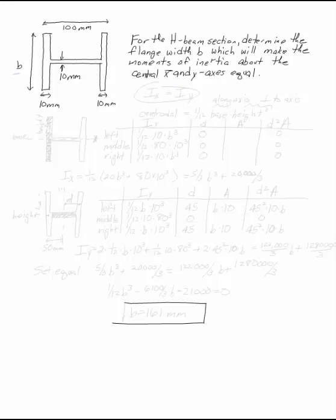For the H-beam section shown, determine the flange width B which will make the moments of inertia about the central x and y axes equal. We want to find Ix and Iy, and figure out how to find B so that these are the same.